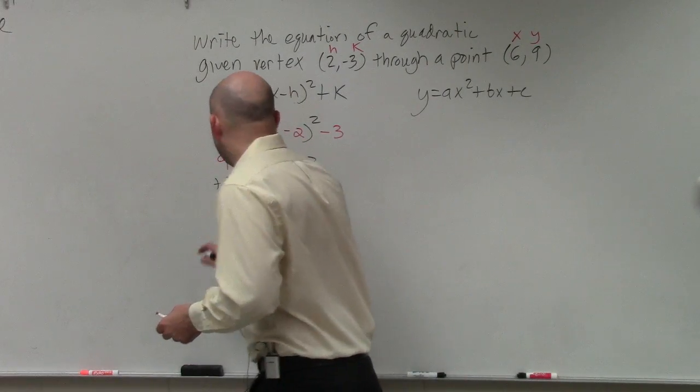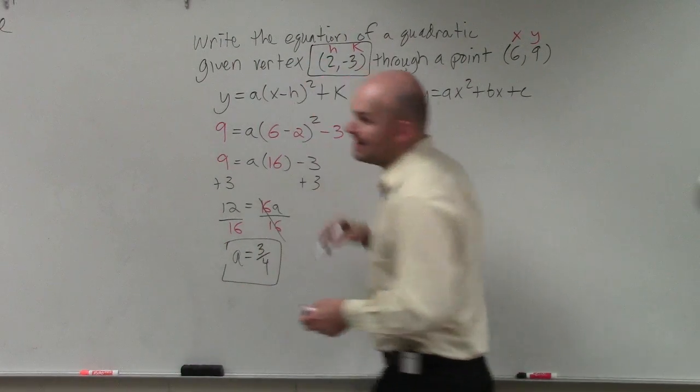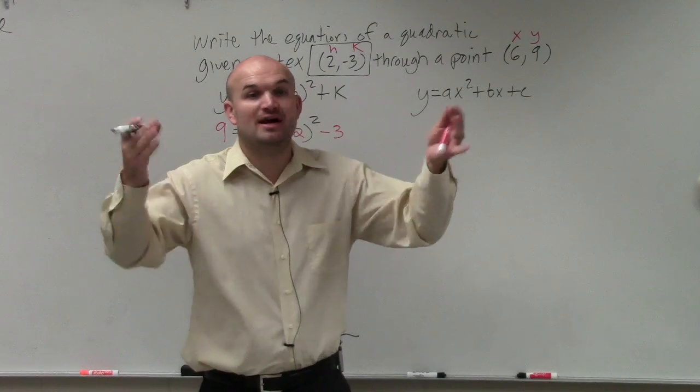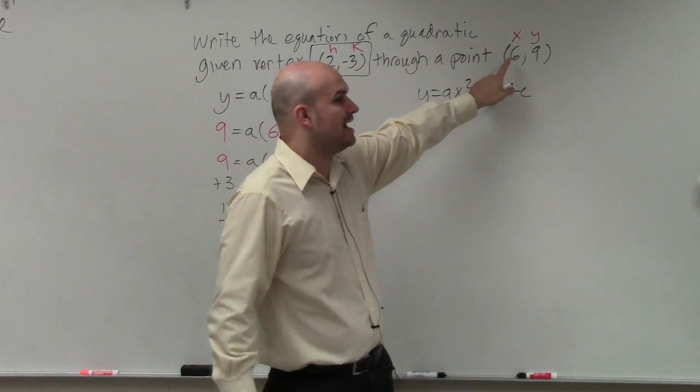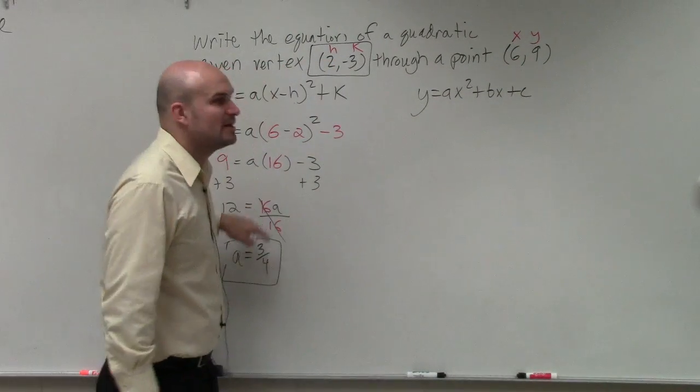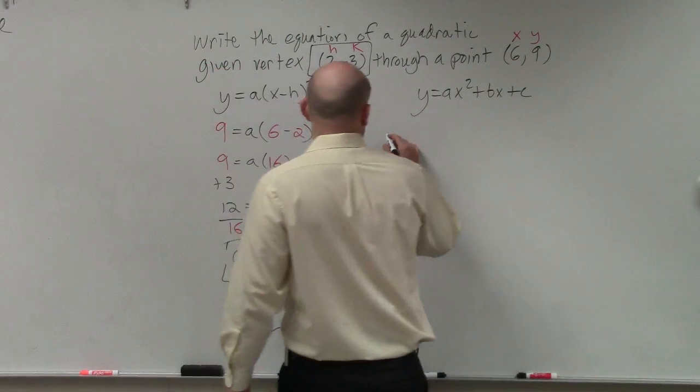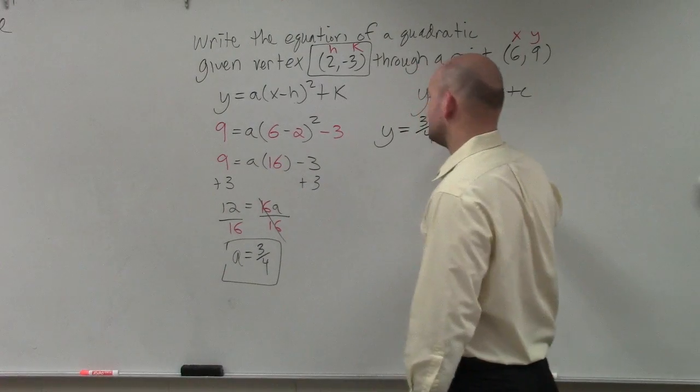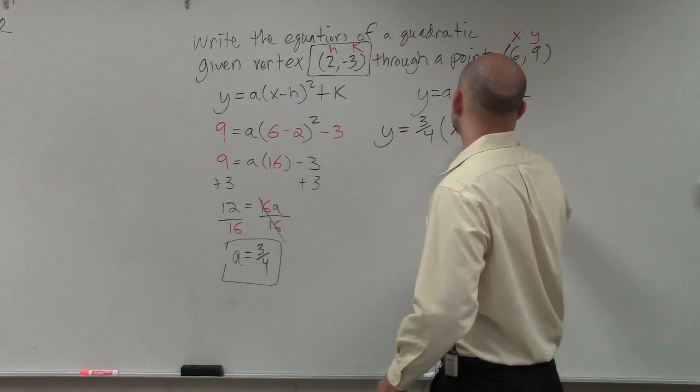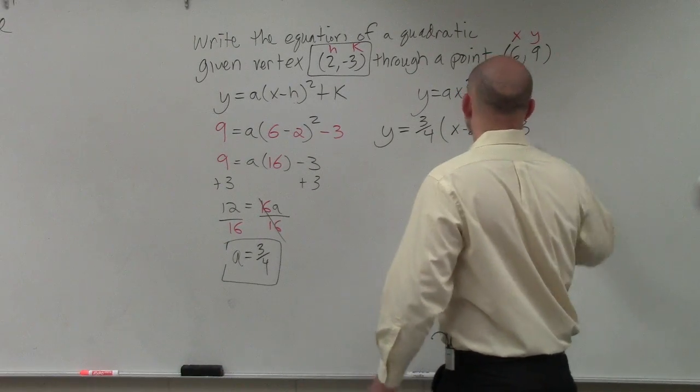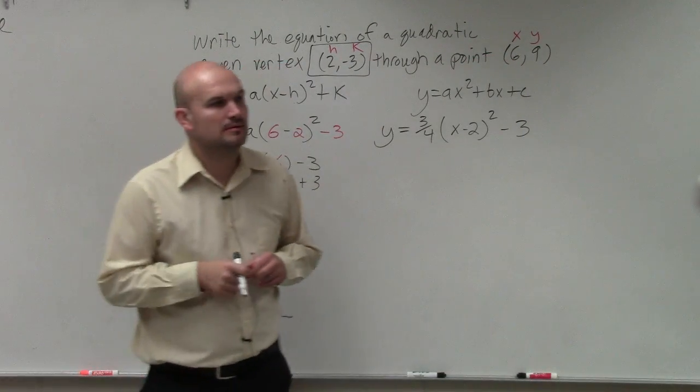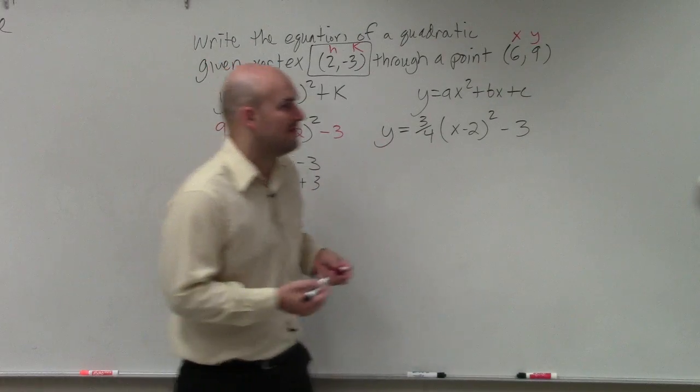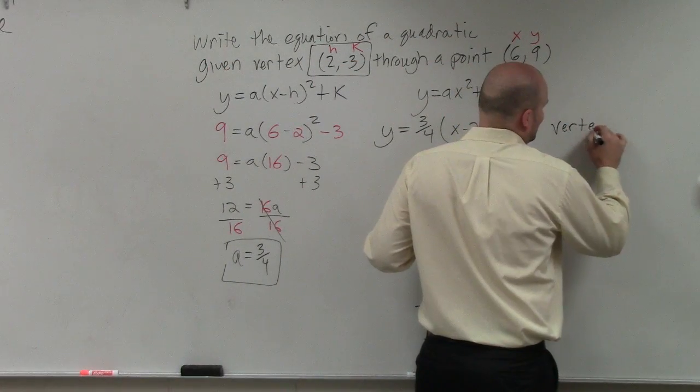So now, ladies and gentlemen, I know a and I know h and my k. When we're writing the equation of the line, the equation of the line is an equation that works for an infinite many points. So we're going to leave x and y now back alone. We only plugged in x and y so we could find the value of a. Now, to write the final equation of our line, we'll say y equals 3 fourths times x minus 2 squared minus 3. Does that make sense?